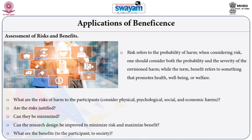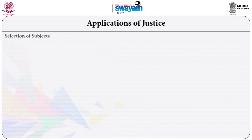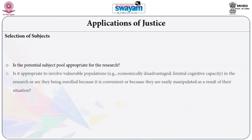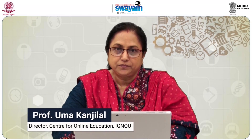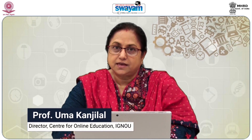What are the benefits to the participant and to society? The third aspect, application of Justice, covers selection of subjects. Is the potential subject pool appropriate for research? Is it appropriate to involve vulnerable populations — for example, economically disadvantaged or those with limited cognitive capacity — or are they being enrolled because it is convenient or because they are easily manipulated? Are the recruitment procedures fair and impartial? Are the inclusion and exclusion criteria fair and appropriate? With this, we come to the end of this part of the video. In the next part, we will discuss ethics in publication.